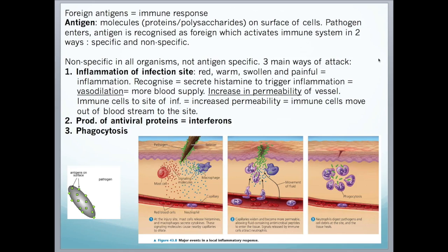At the site of inflammation, the body recognises the infection and histamine is secreted, which triggers inflammation leading to vasodilation — the widening of blood vessels. This allows more blood to flow through the area, and increased permeability of the vessel allows immune cells to move out of the bloodstream to the site. In this diagram, we can see a splinter going through the skin as the pathogen. Mast cells and macrophages release signalling molecules, vasodilating the vessel, allowing neutrophils to move out from the bloodstream to the infection site. The neutrophils then digest the pathogens and cell debris, and the tissue is allowed to heal.